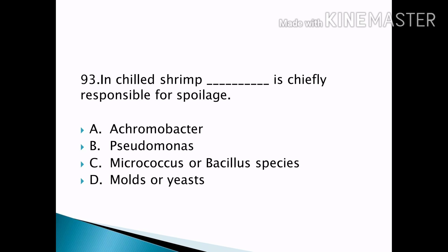In chilled shrimp, which organism is chiefly responsible for spoilage? Options — Acromobacter, Pseudomonas, Micrococcus or Bacillus species, molds or yeast. Correct answer: Option A — Acromobacter.